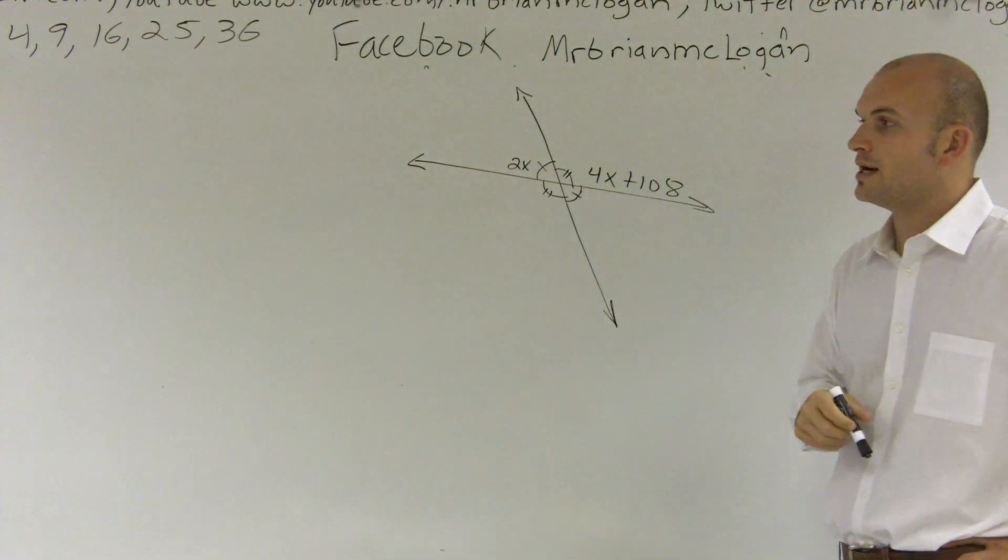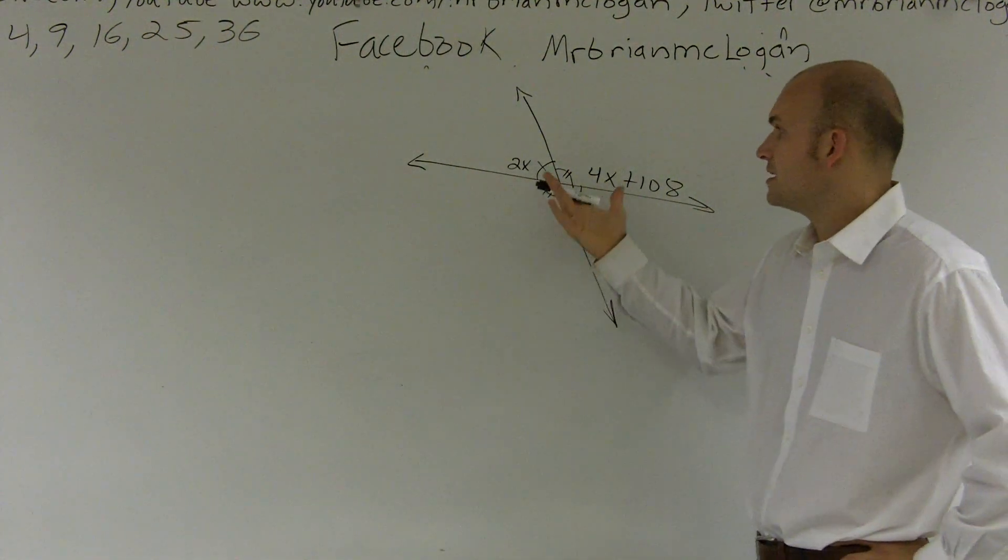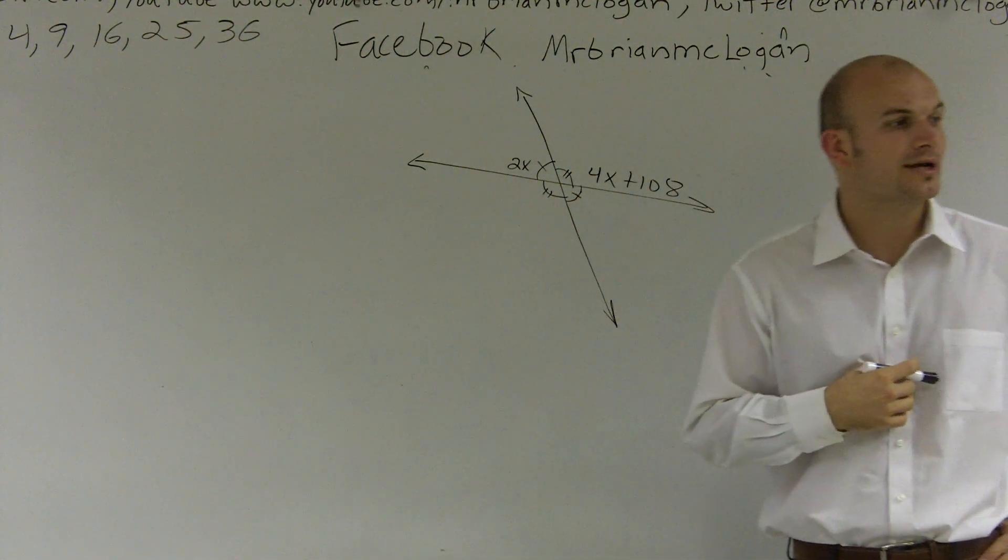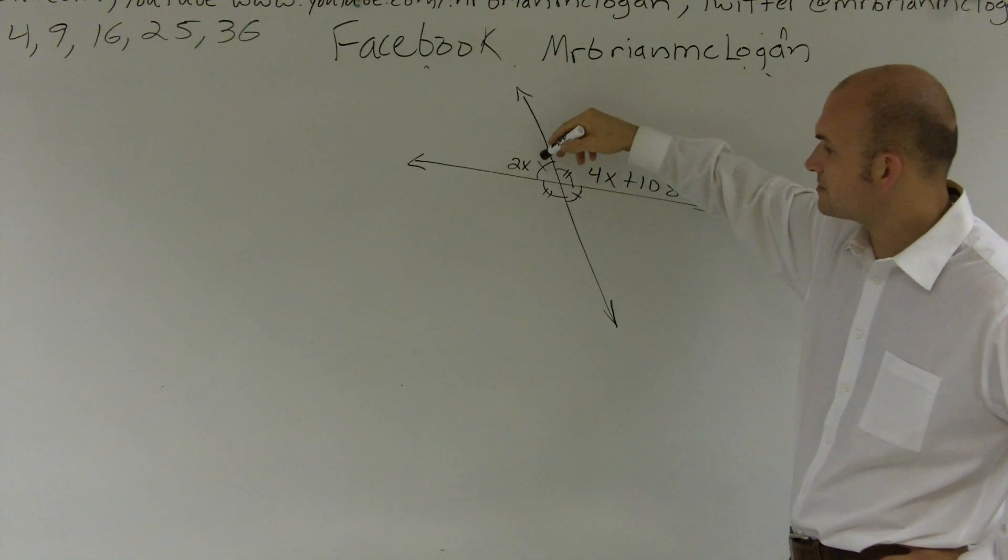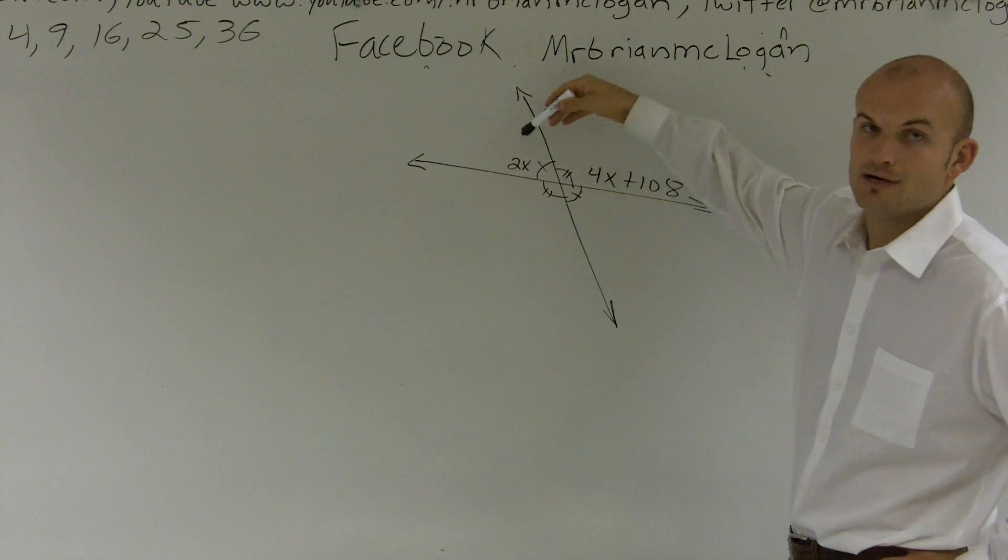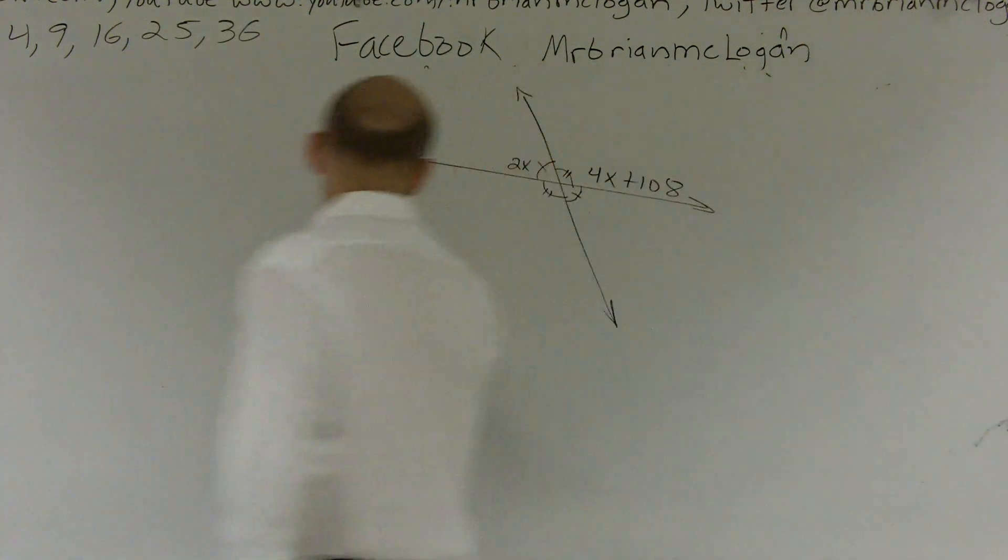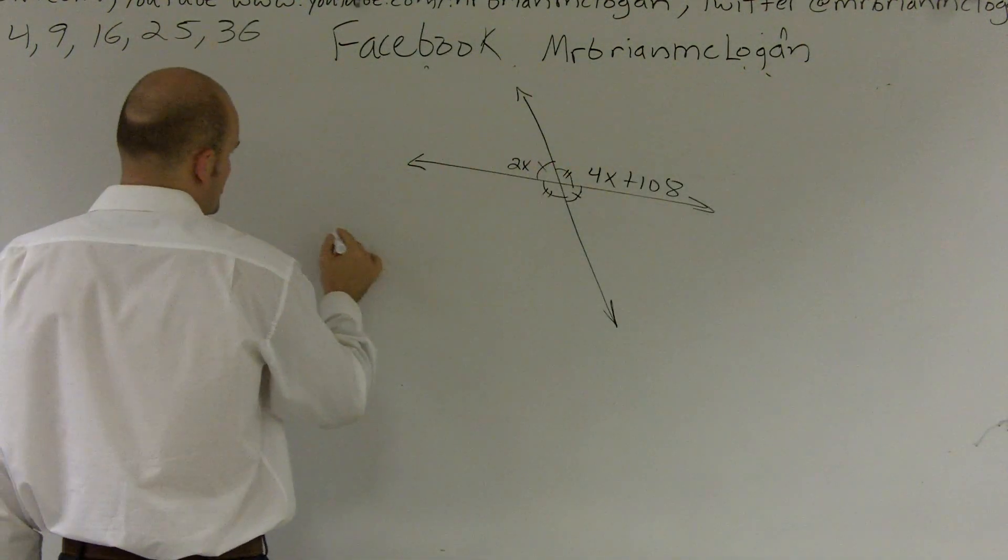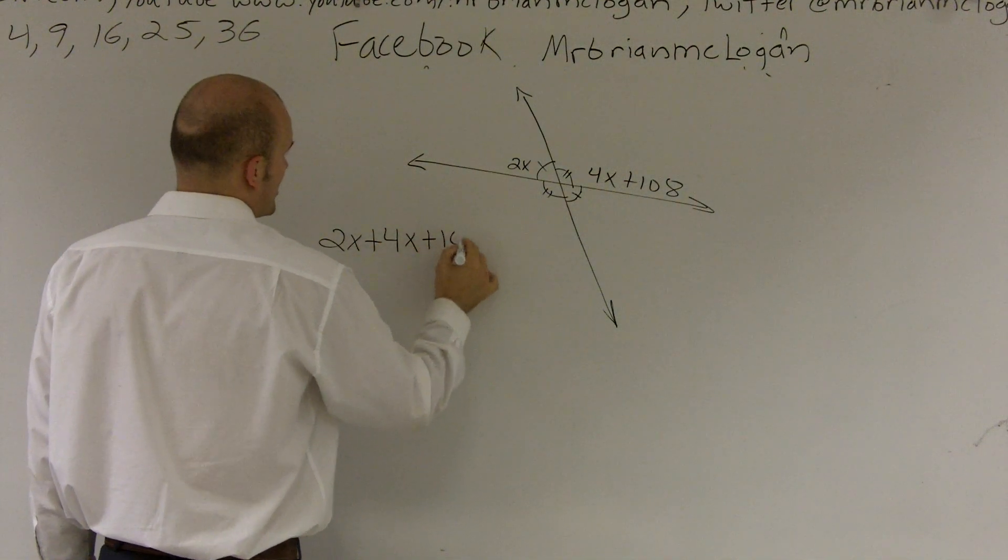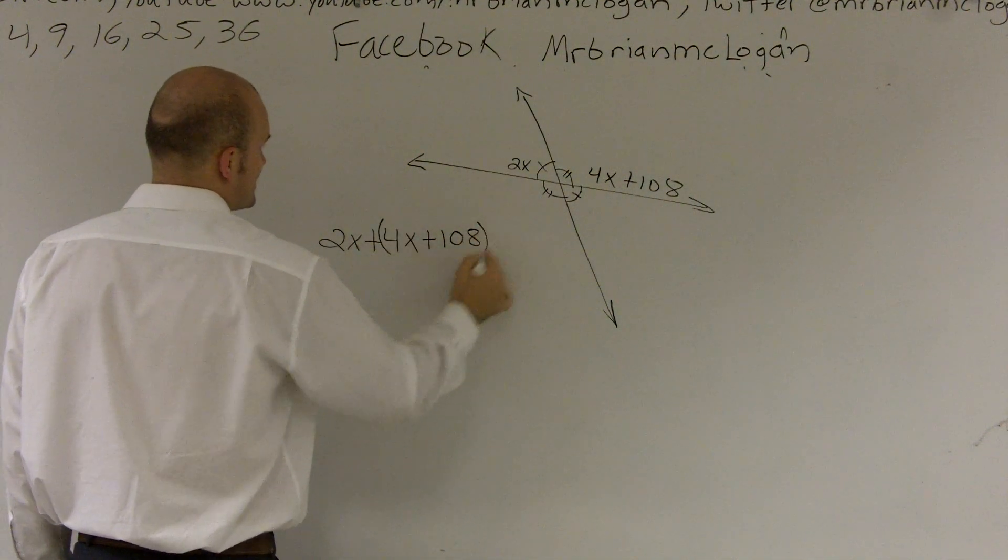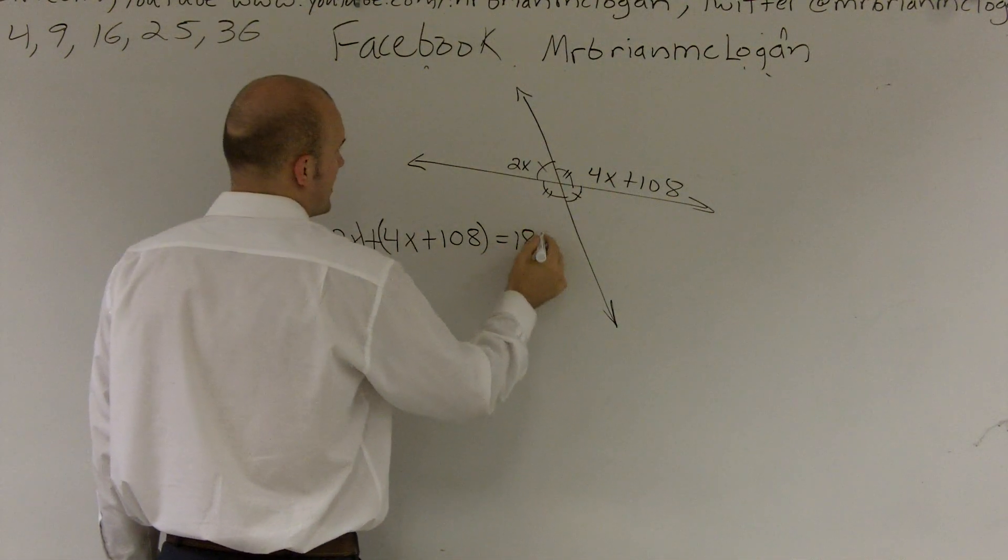Well, one thing that we know and that we're learning in our book is a straight line is 180 degrees. And if you look at these two angles, when they are combined together, they make up a straight line. So therefore, I can say now 2x plus 4x plus 108, which is this angle plus this angle equals 180.